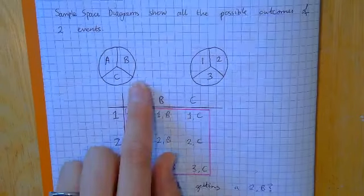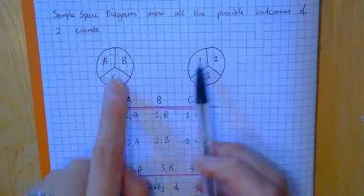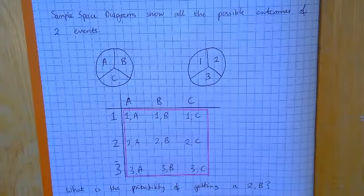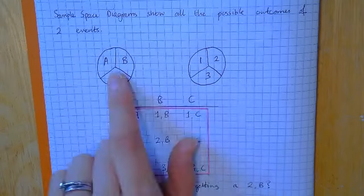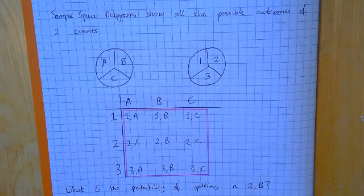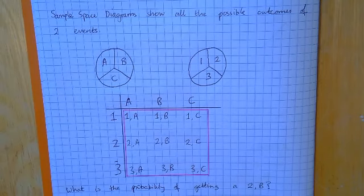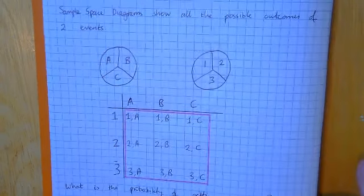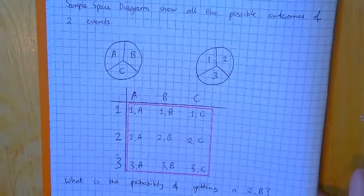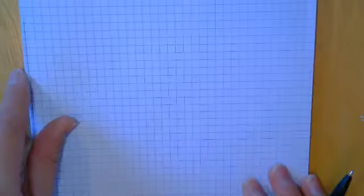That's the first type of sample space diagram, where I've got two things like letters and numbers and just write them next to each other. There are only going to be two videos this week — not as much work. You worked exceptionally hard last week so we have a little bit of a breather this week.